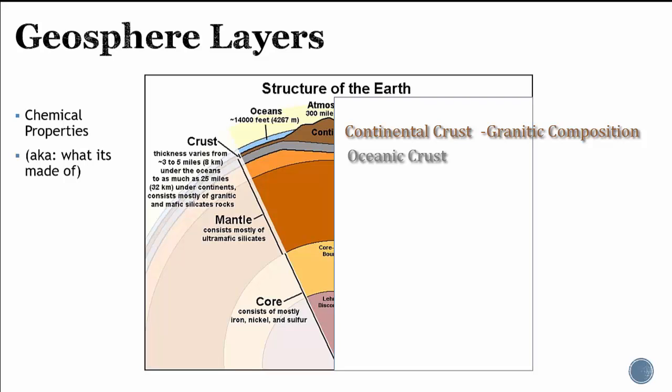We also have oceanic crust, which is thicker, more dense, and made out of basalt. Then if you go down below that crust, we have the mantle, which is an ultramafic rock.